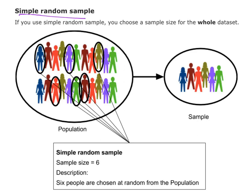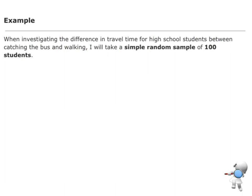If I'm going to use simple random sampling, I choose a sample size for the whole dataset because everyone is chosen at random. So out of my class of 30, I'm going to choose 6 people. All I need to say is that I've got a sample size of 6 and I chose those 6 people at random from my population. For example, if I'm investigating the difference in travel time for students between catching the bus and walking, I would take a simple random sample of 100 students. That's all I'd need for achieved; for merit, I would need to describe what a simple random sample is and how I would carry it out.